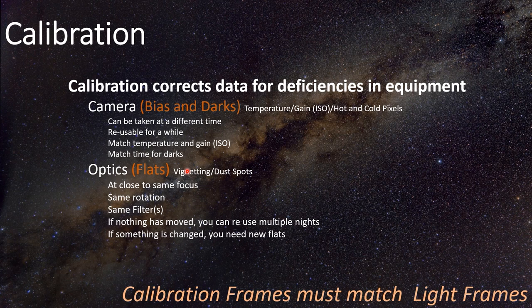For correcting optics with flats, you need them at close to the same focus. Even during the night your focus changes a little, so get as close as you can but don't obsess over it. Flats should be at the same rotation in the optical tube with matching filters. If your filter has rotated at all, you must take new exposures. If nothing has moved, you can reuse flats for multiple nights — at a star party for four or five nights, one set of flats will do, as long as you don't move your camera. Calibration frames must match your light frames, no matter what session you took them in.